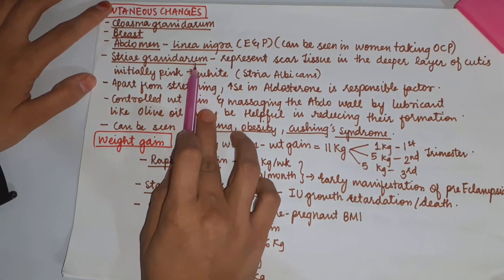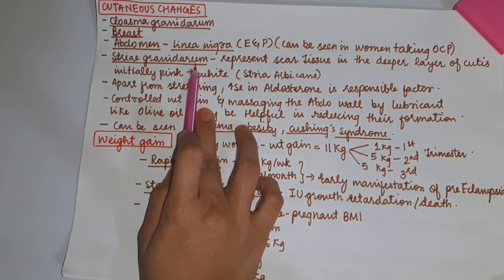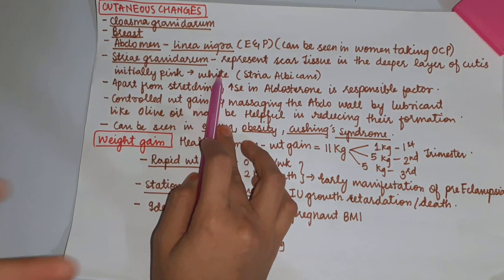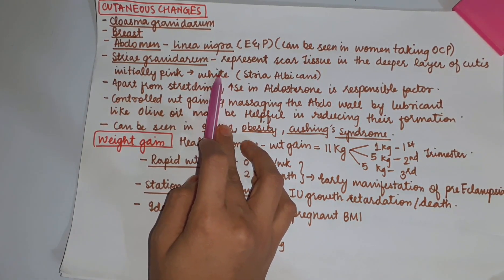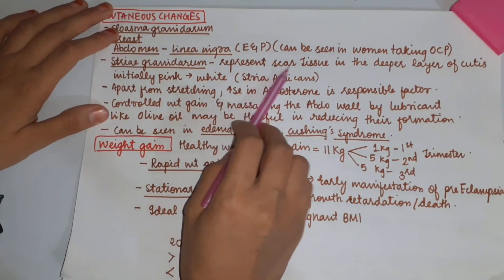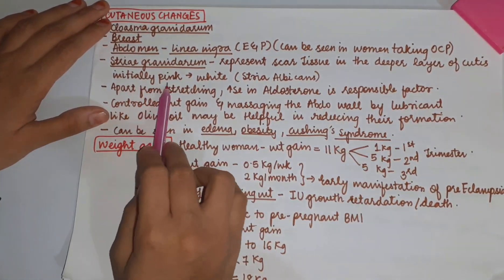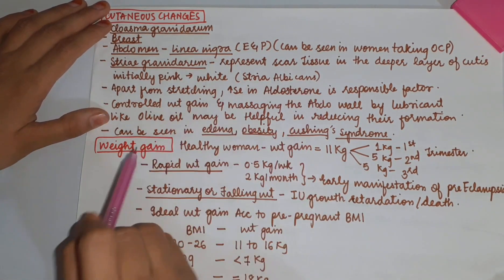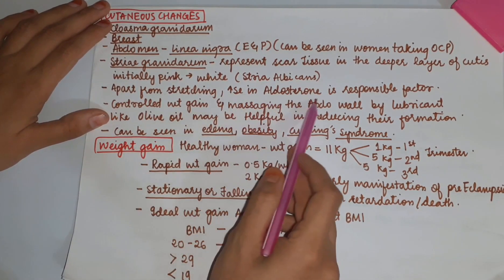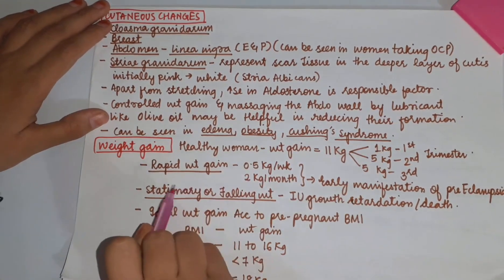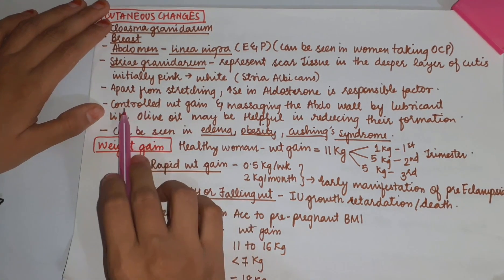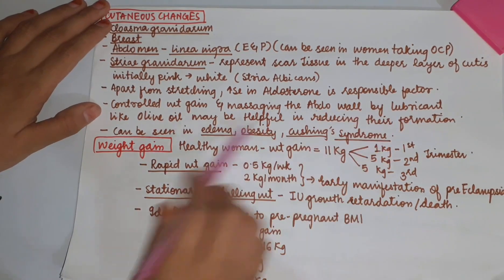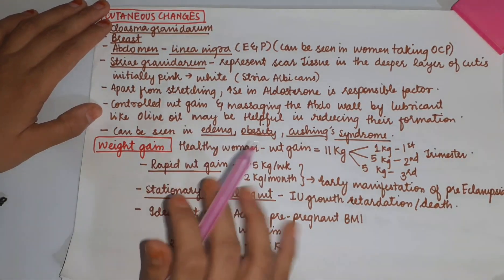Striae gravidarum are depressed lines of variable length present mainly on the abdomen, but also on the breast and inner thigh. They represent tearing in the deeper layer of the cutis. Initially they are pink, and later they become white, when they are called stria albicans. Apart from stretching, increased aldosterone is also a responsible factor. Controlled weight gain and massaging the abdominal wall with a lubricant like olive oil may help reduce their formation.